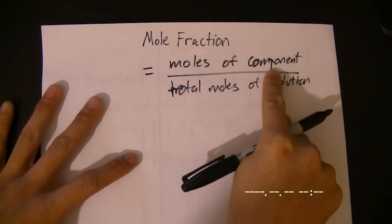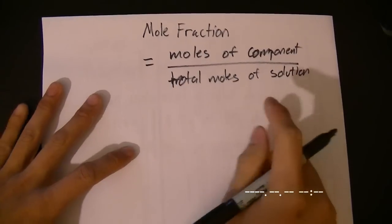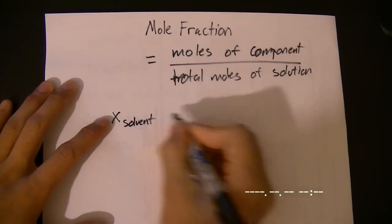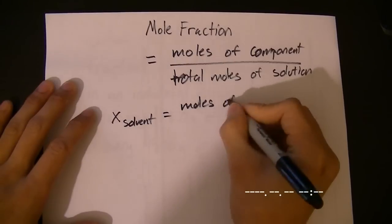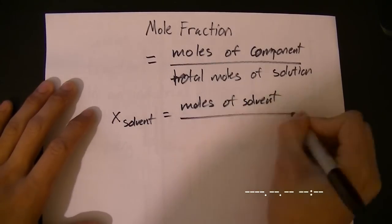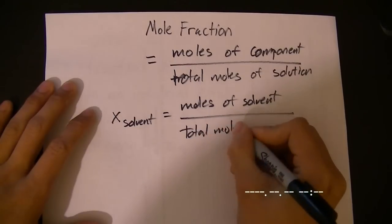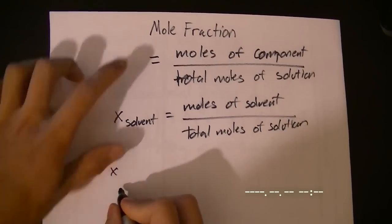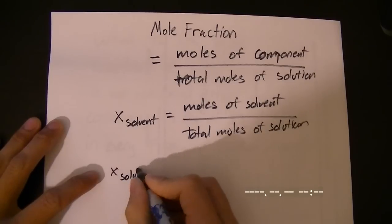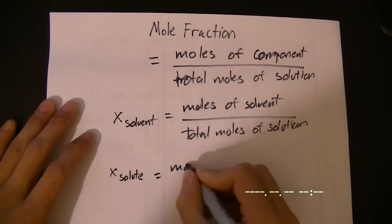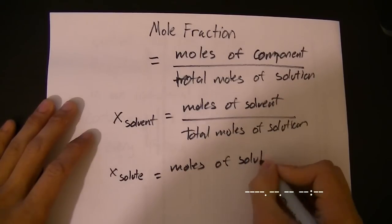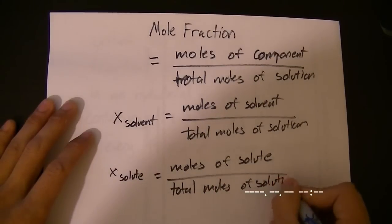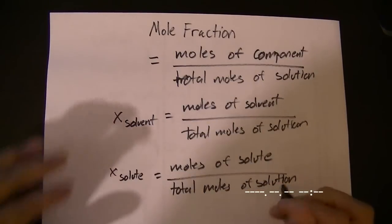So, the moles of whatever component you're looking for in the mole fraction over the total moles of the solution. So, let's say, for example, we wanted the mole fraction of the solvent. Well, that would simply be the moles of the solvent over the total moles of the solution. Or if we wanted the mole fraction of the solute, it would be the exact same thing: moles of solute over total moles of solution.